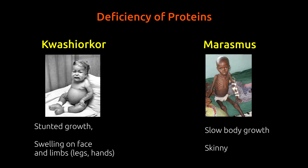Stunted growth, swelling of face and limbs, and diarrhea are a few effects of Kwashiorkor. A Marasmus-diseased person looks skinny and shows slow body growth.